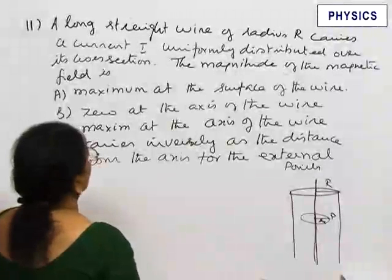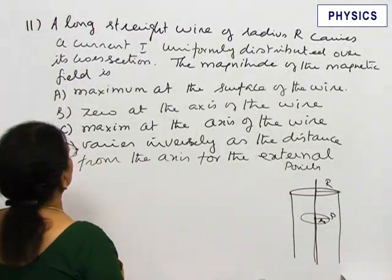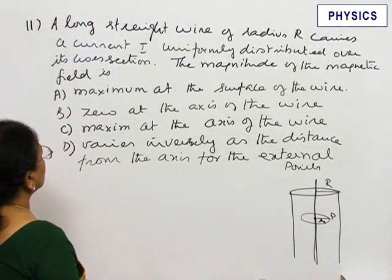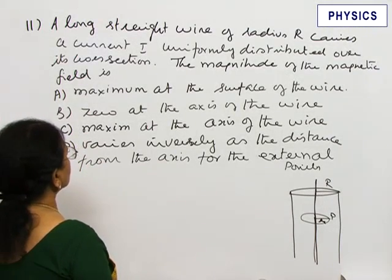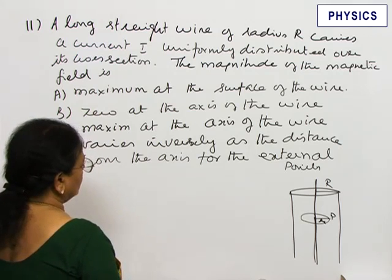Question 11. A long straight wire of radius R carries a current I uniformly distributed over its cross section. The magnitude of the magnetic field is? We have been given 4 options. We have to examine this option.